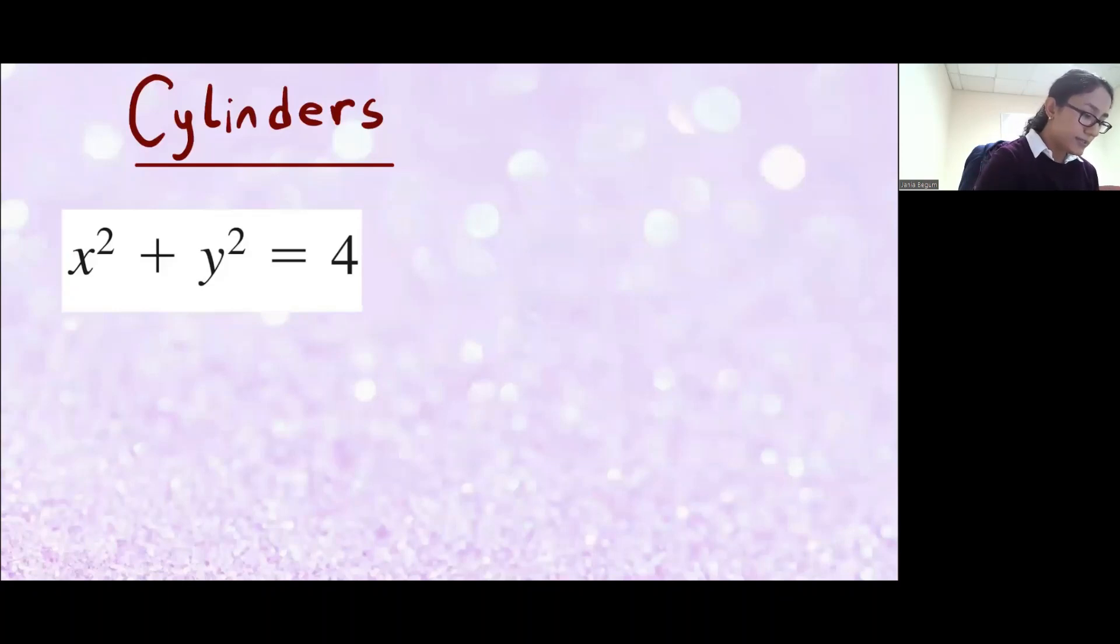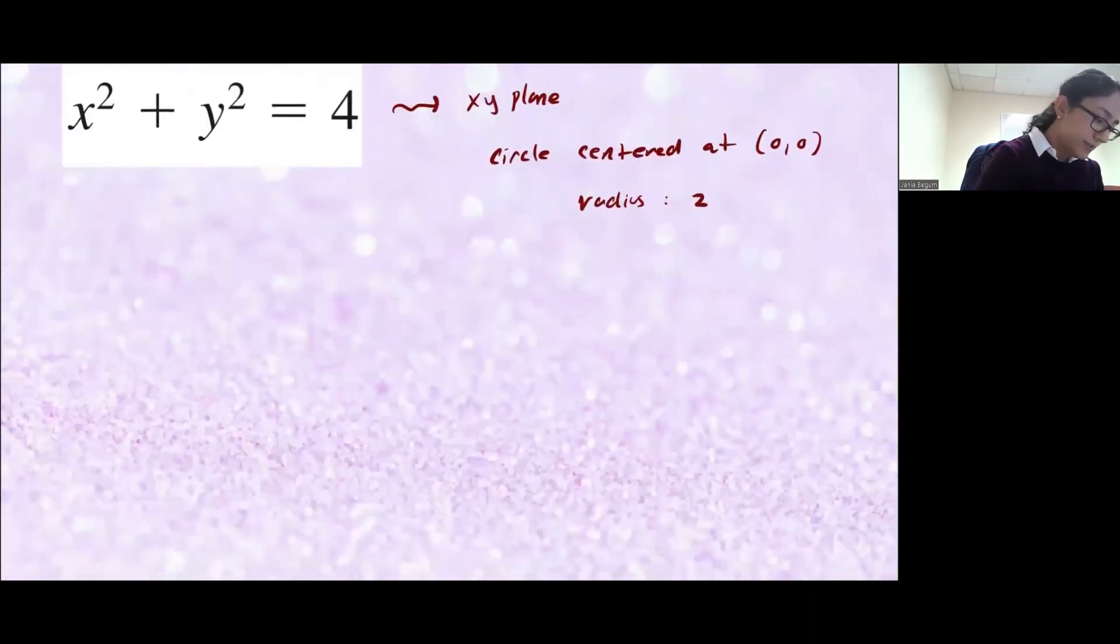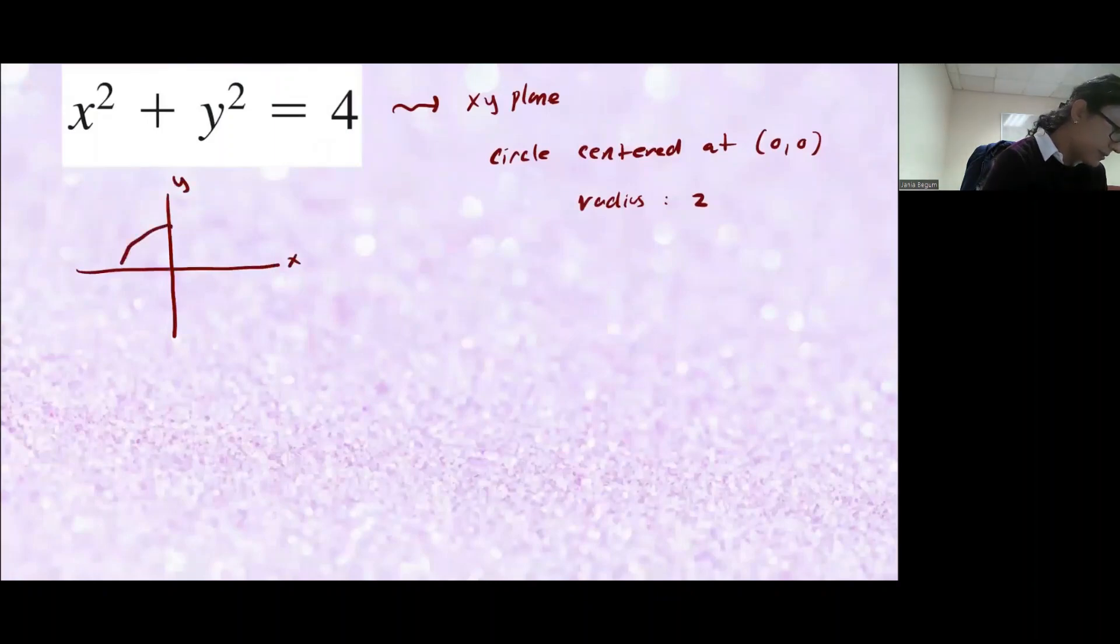We know that this in xy plane is going to be a circle centered at the origin and the radius of this circle is going to be 2. So if I were to draw just the curve in the xy plane, it's going to look something like this. It's a circle of radius 2.